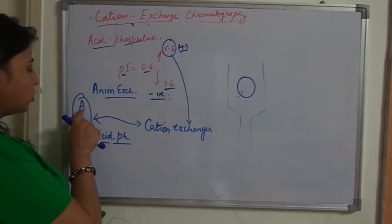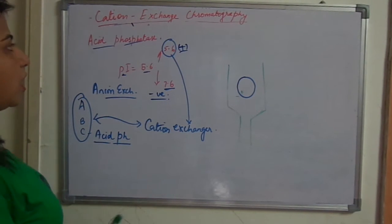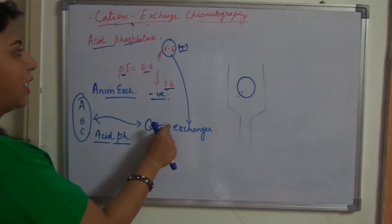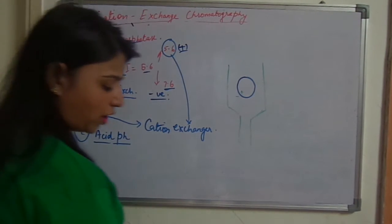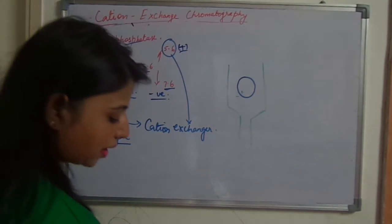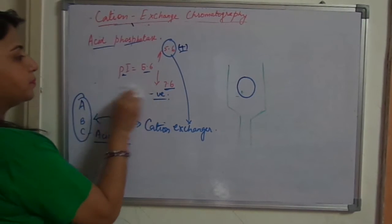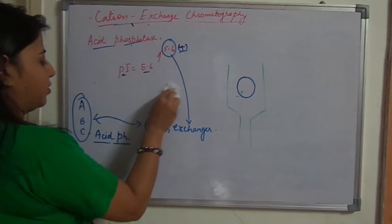Now here I am taking a mixture ABC. Among this C is acid phosphatase and we are separating it with a cation exchanger at pH 5.6. I am not taking 7.6 because it will become an anion exchanger and anion exchanger we have discussed in the last video. So I will drop this part.